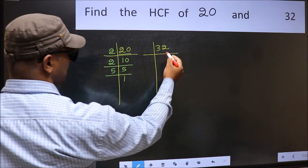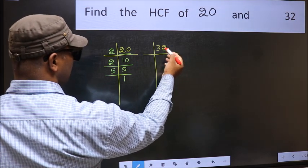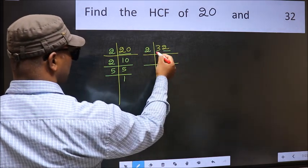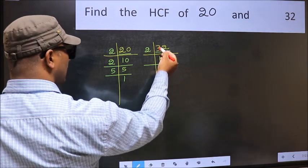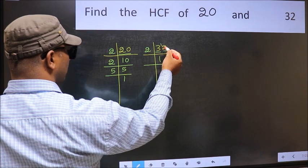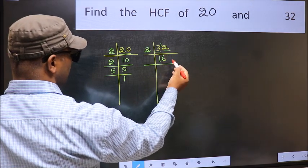Now the other number. Last digit 2, even, so take 2. First number 3. A number close to 3 in 2 table is 2 once 2. 3 minus 2 is 1, 1 carried forward 12. When do we get 12 in 2 table? 2 times 6 is 12.